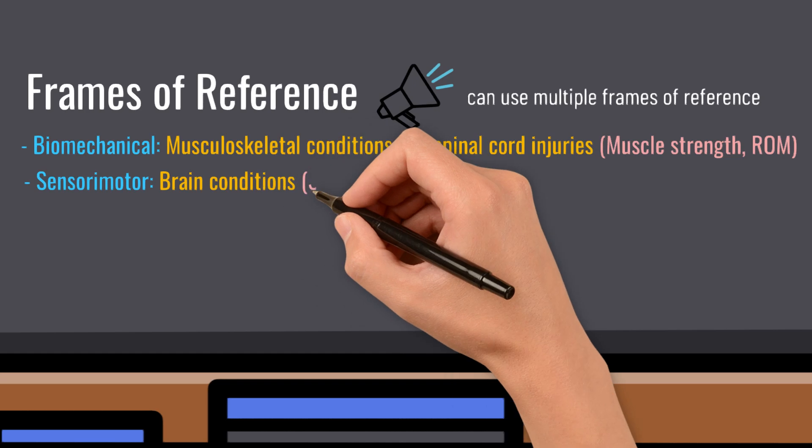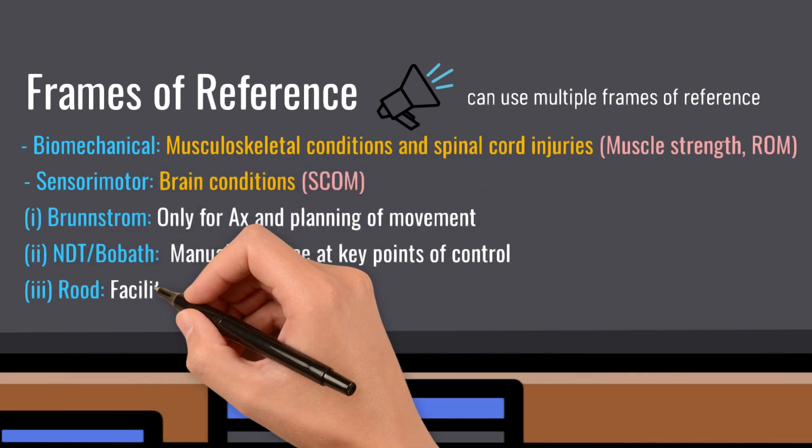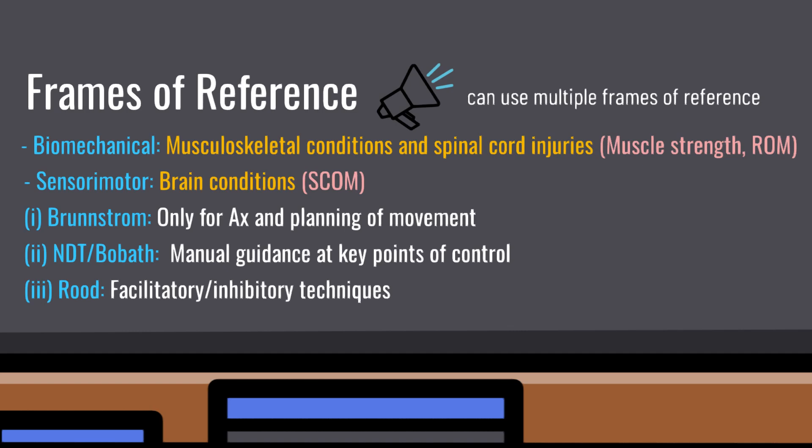In the sensory motor frame of reference, there are three taught: Brunstrom, NDT or Bobath, and Ruhrt. All are only used to treat clients with some sort of brain condition or brain injury, such as a stroke, traumatic brain injury, or brain tumor, focusing primarily on improving client factors such as selective control of movement. Note that Brunstrom is only used for assessment and planning purposes — its treatment principles are not taught at WITS. The NDT or Bobath frame of reference focuses on principles such as manual guidance at key points of control, while Ruhrt details facilitatory or inhibitory techniques to inhibit hypertonicity or facilitate a muscle contraction.